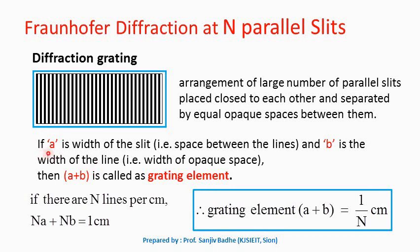If A is the width of the slit, that is the space between the two lines, and B is the width of the line, that is the width of the opaque space, then we can call A plus B as the grating element. So grating element is equal to width of the slit plus width of the separation.